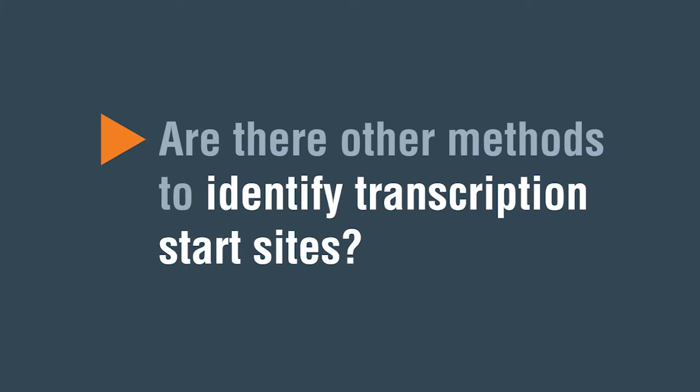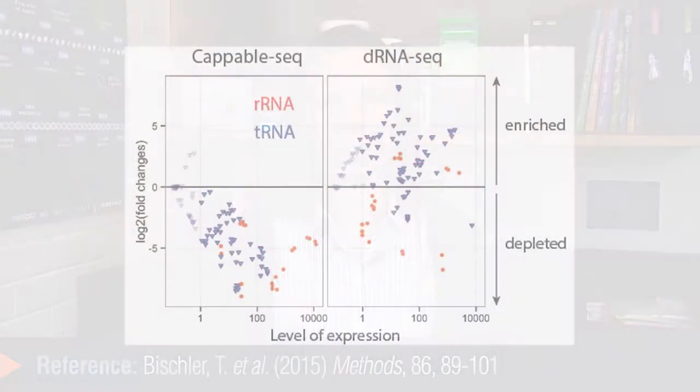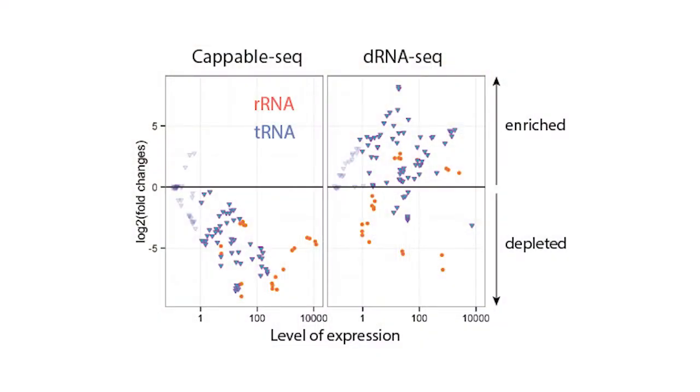For prokaryotes, DRRNA-Seq has been used extensively to identify transcription start sites. It uses the terminator exonuclease TEX treatment to theoretically remove all non-triphosphate RNA. The limitation of this technology is that success seems to highly depend on the 5' end structure of the RNA. Therefore, the removal of non-triphosphate RNA, so the non-TSS, is incomplete and in some cases non-existent, leading to false positive TSS, for example, tRNA, and large ribosomal contamination.